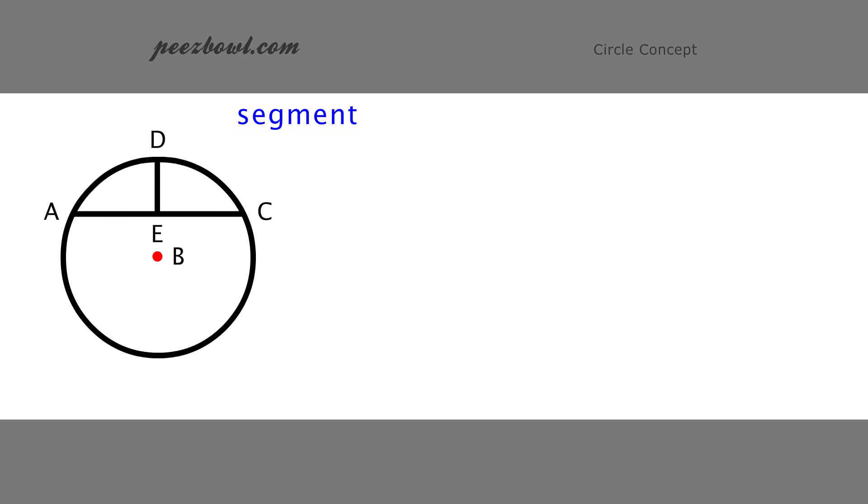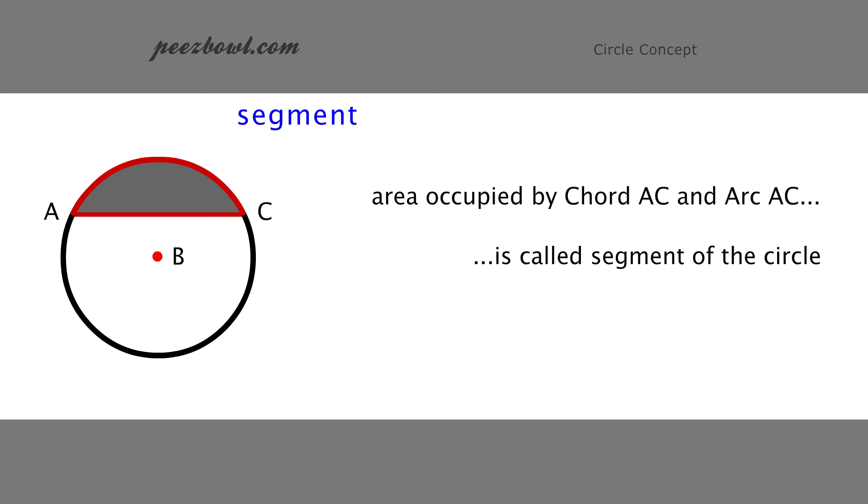Let us remove the perpendicular line DE and color the area enclosed by chord AC and arc AC. The area occupied by the chord AC and arc AC is called segment of the circle, as shown in this diagram.